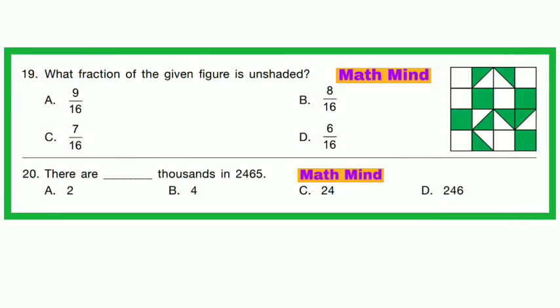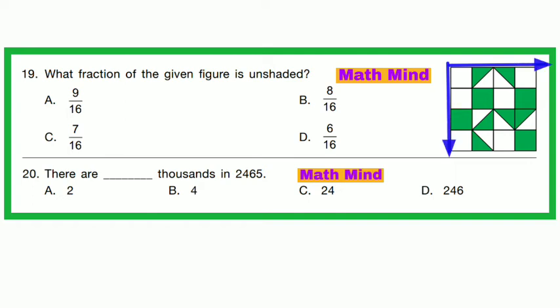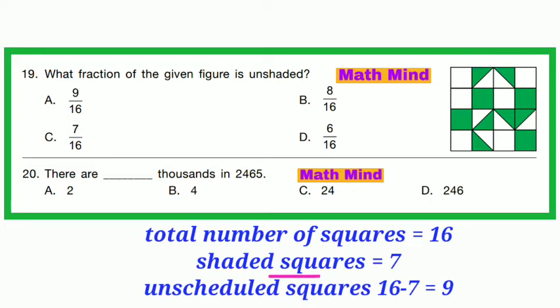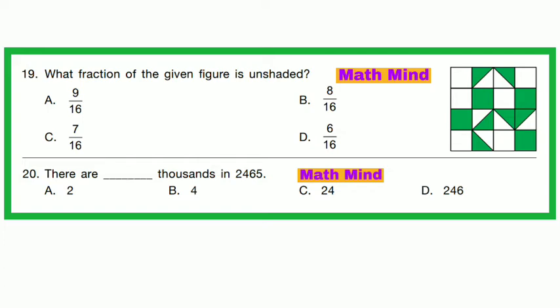Question No. 19: What fraction of the given figure is unshaded? Total squares = 4 × 4 = 16. Taking 2 half-squares as 1 square, there are 7 shaded squares. Unshaded squares = 16 − 7 = 9. So the fraction of unshaded squares is 9/16. Option A is correct.